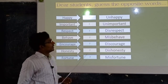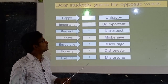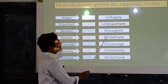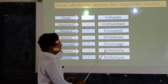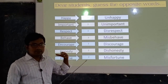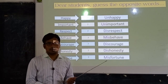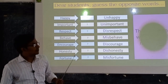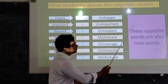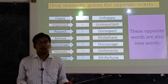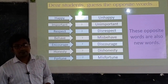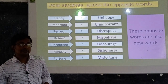We have made these opposite words by adding 'un-', 'dis-', or 'mis-' to the front of the words. By adding this group of letters, we have created opposite words. These opposite words are also new words. This is how you can make so many words and enrich your vocabulary. So, this topic — suffix and prefix — is for enriching your vocabulary.